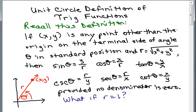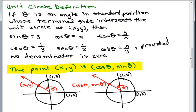So this leads us to a new definition called the unit circle definition. And this definition is useful when we're going to start graphing trig functions. So if θ is an angle in standard position whose terminal side intersects the unit circle at (x,y). What's the unit circle? Remember the unit circle means r equals 1. So in the unit circle, r equals 1.